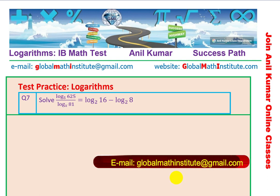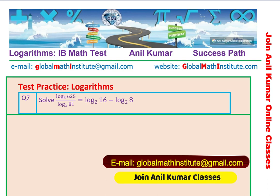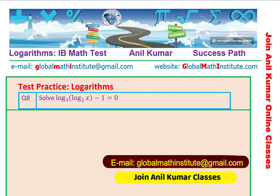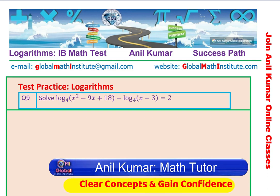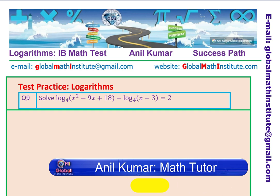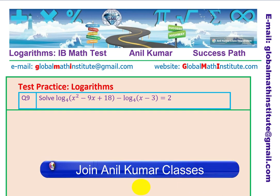You need to solve this particular question — check the domain and watch for extraneous roots. Question number 8 is to solve an equation where we have nested logarithms: log to the base 3 of (log to the base 2 of x) minus 1, equals 0. Question number 9 is to solve log to the base 4 of a quadratic expression, minus log to the base 4 of (x − 3), equals 2.